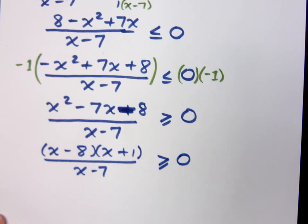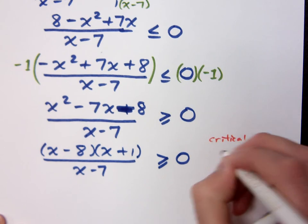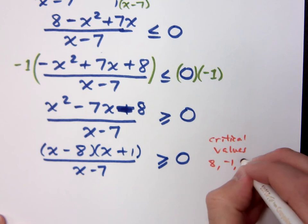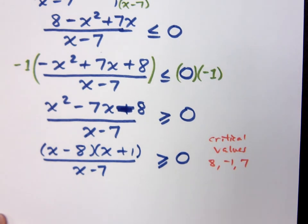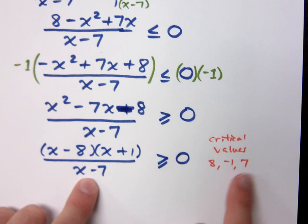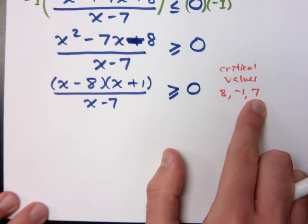So, what are your critical values? 8, negative 1, and 7. Critical values are 8, negative 1, and 7. Do you all agree? Okay. How do we get those numbers? It's what makes the numerator equal to 0. And the 7 is what makes the denominator equal to 0.